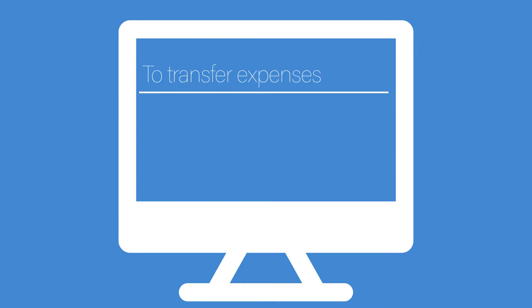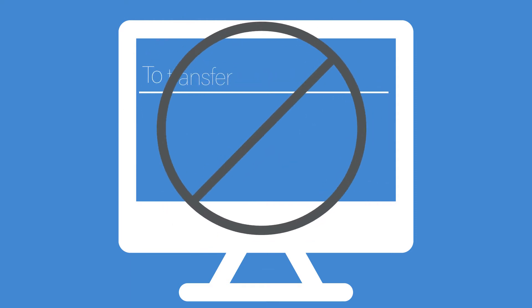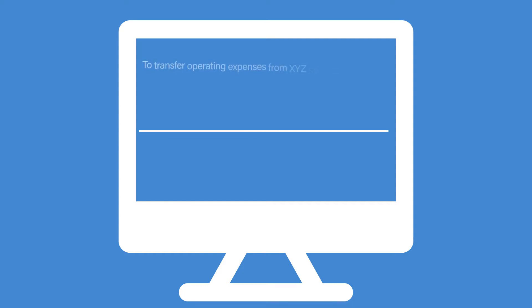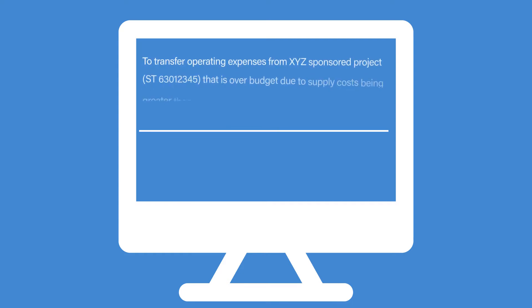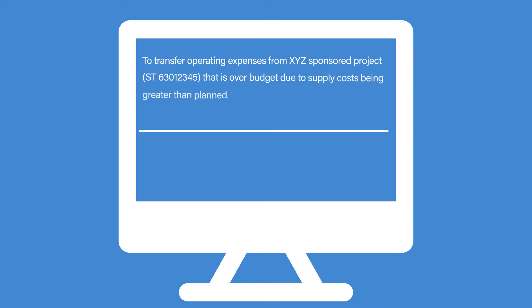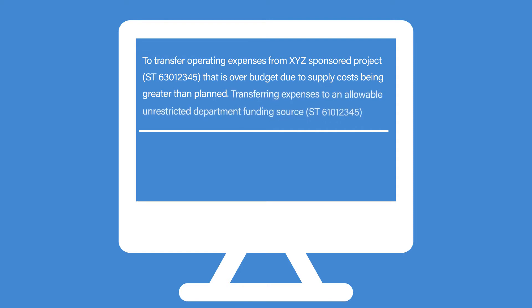For example, don't create a long description that simply says "to transfer expenses." Instead, say something like: "To transfer operating expenses from XYZ sponsored project speed type 630-12345 that is over budget due to supply costs being greater than planned. Transferring expenses to an allowable unrestricted department funding source speed type 610-12345."